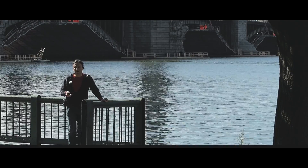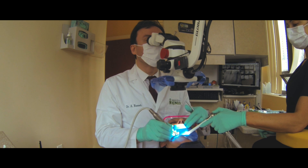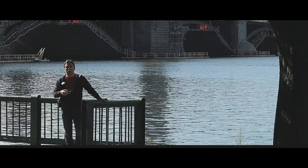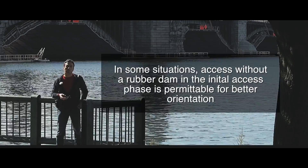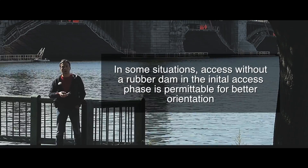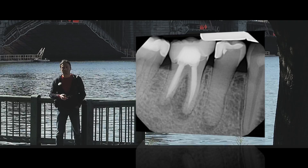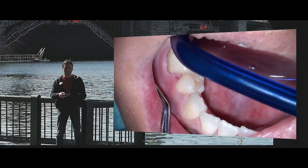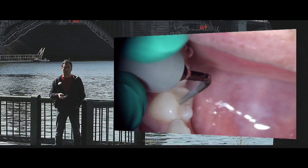It then becomes a question of how do you access these types of canals and treat them effectively. That's where it goes back to the idea of having illumination and magnification, because that really is the key point here. Using ultrasonics and water, combined with your understanding of pulp morphology and anatomy, and getting properly oriented with the tooth — meaning not isolating just that tooth alone, but including a few adjacent teeth for comparison — will help you achieve proper access lines so that you don't end up perforating off to the side.